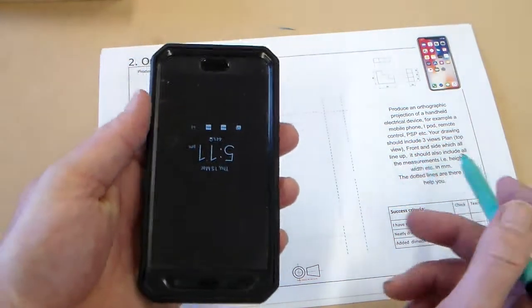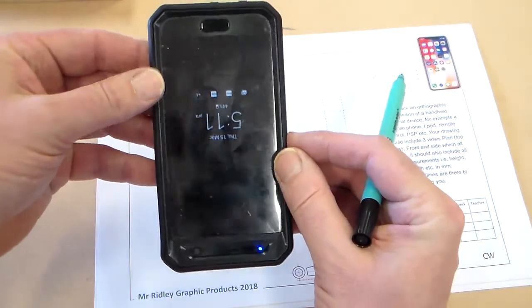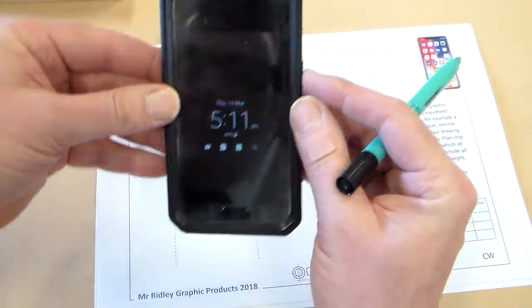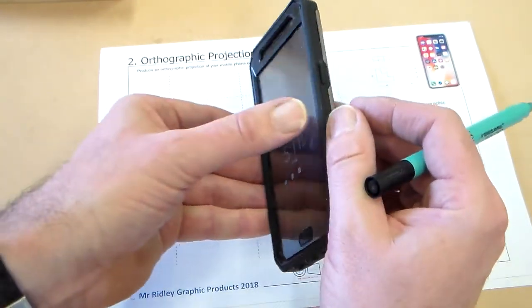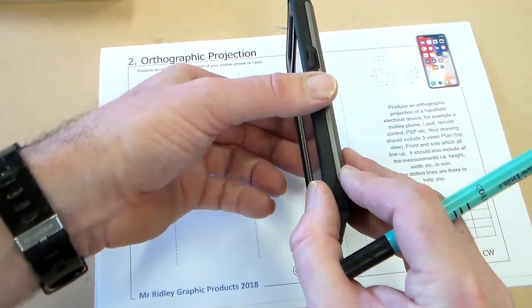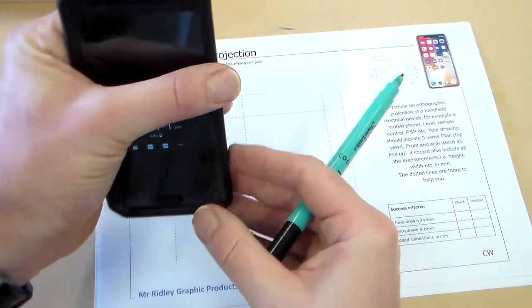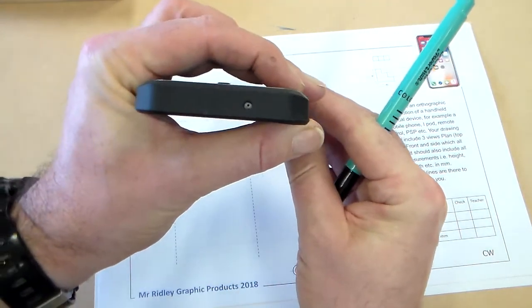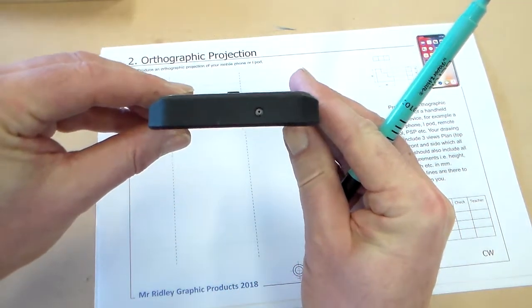I've got my phone here. So the views we need to look at, I'm going the right way, are we going to have the front view there, we're going to have a side view there, and we're going to have a plan view.